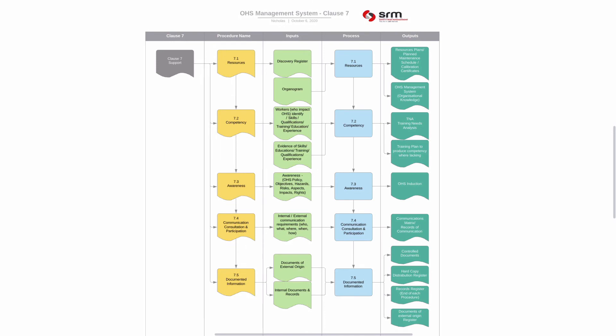Taking a broader view of Clause 7: when implementing it in an organization, I would develop a process for resources that addresses the organogram and resource planning — such as onboarding new employees per project, equipment and infrastructure, personal protective equipment, calibration services, medical services, and the services of an occupational hygienist. Resources for both current and future business needs must be considered.